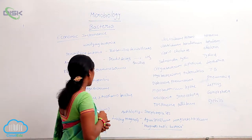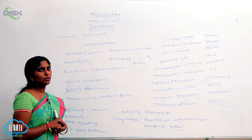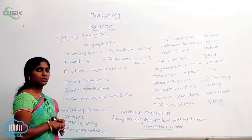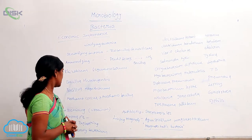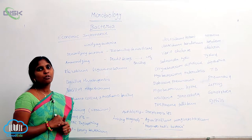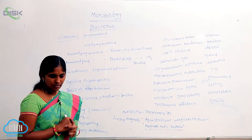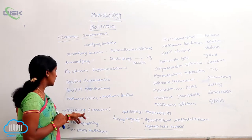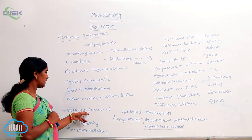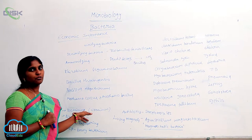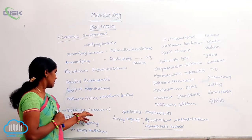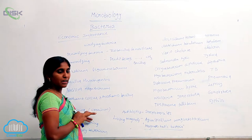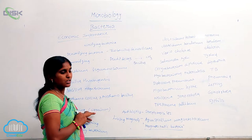Bacteria are used in several ways. They are also used in biomining. Biomining is the process where microorganisms are used in the extraction of valuable metals. During biomining — that is, during the extraction of different costly metals — bacteria are used. By using these bacteria, they are reducing 50% of the investment.